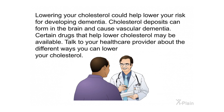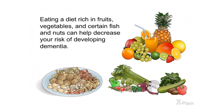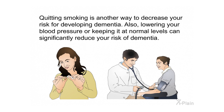Lowering your cholesterol could help reduce your risk for dementia, as cholesterol deposits can form in the brain and cause vascular dementia. Talk to your healthcare provider about ways to lower your cholesterol. Eating a diet rich in fruits, vegetables, fish, and nuts can help decrease your risk. Quitting smoking is another way to decrease your risk. Additionally, lowering your blood pressure or keeping it at normal levels can significantly reduce your risk of dementia.